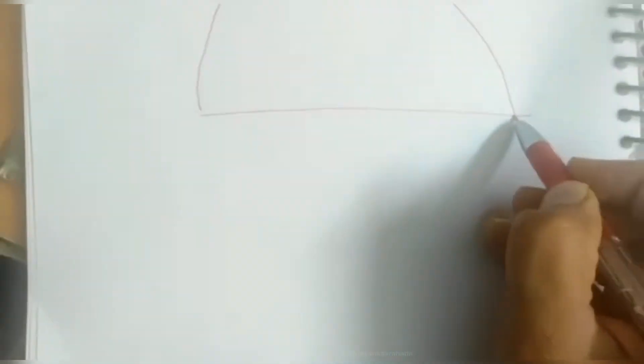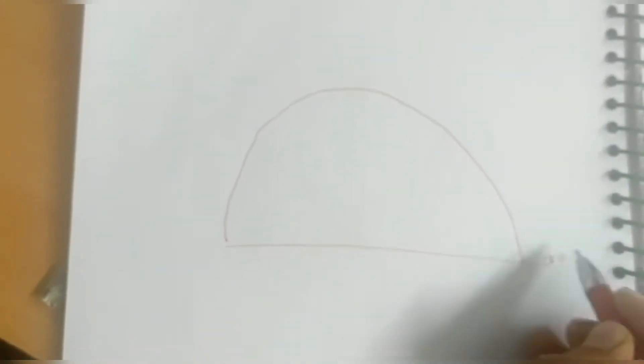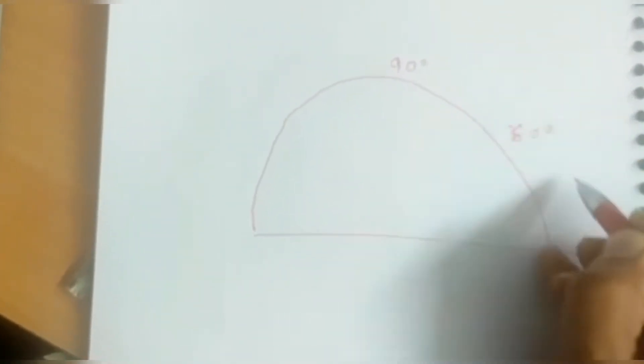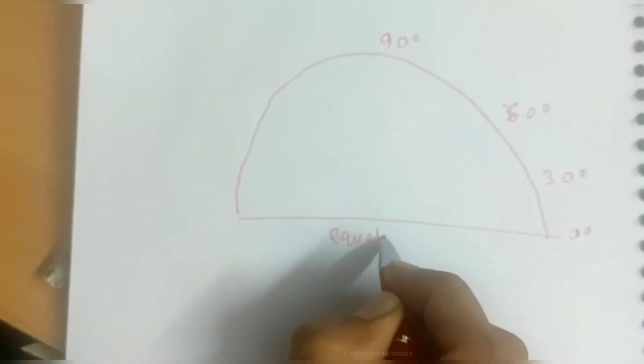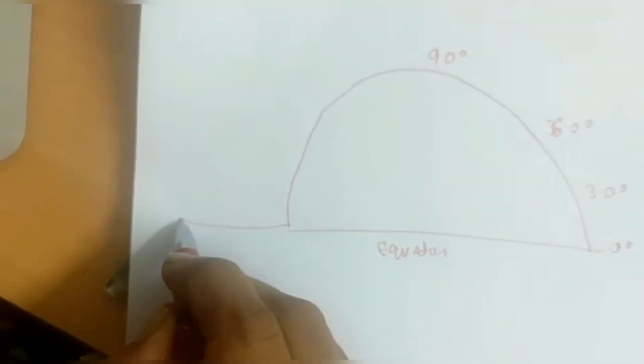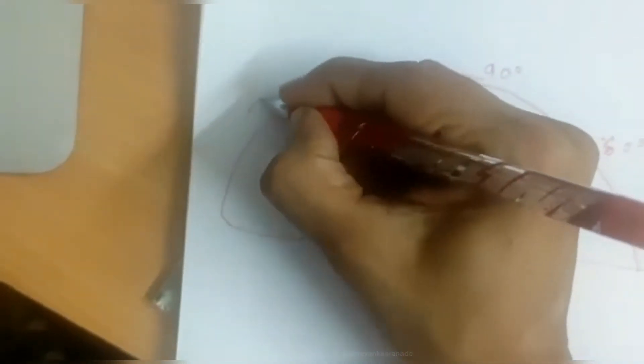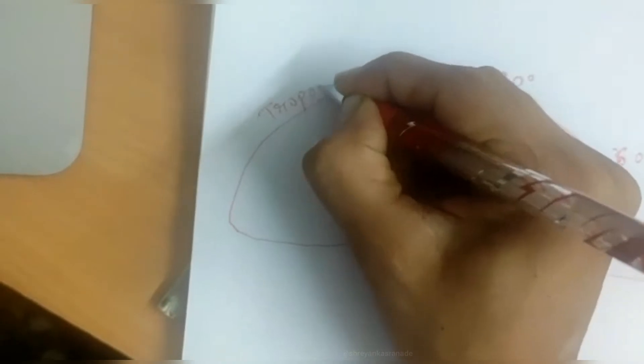Hello all. This video is for those who have some confusion regarding the pressure belts and the cells. So let's talk about the earth as a whole. This is your equator, this is 90 degrees, this is 60 degrees, this is 30 degrees. This is your equator and this is your atmosphere — let this be the tropopause.